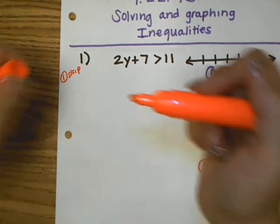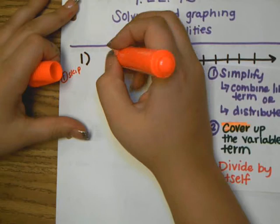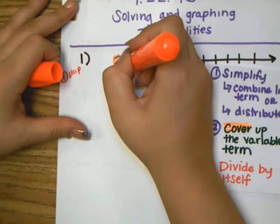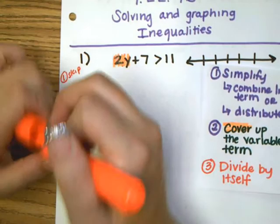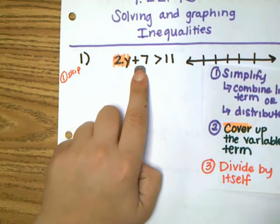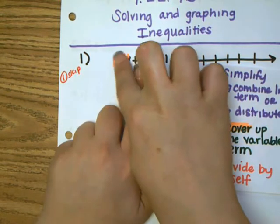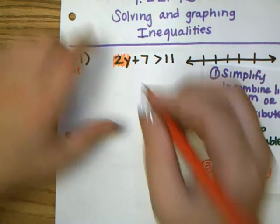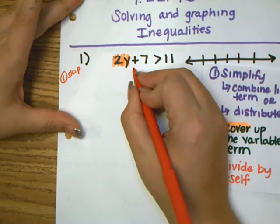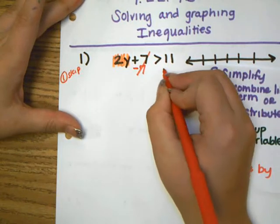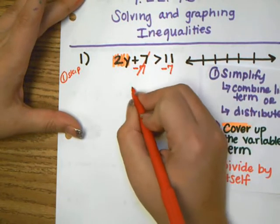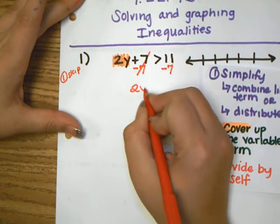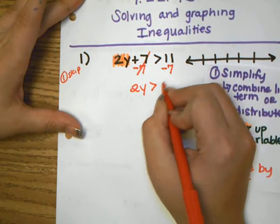Step 2, I am going to highlight and cover up the variable term. That helps me know where to start because I want the variable by itself. To get rid of a positive 7 we are going to subtract 7 from both sides.